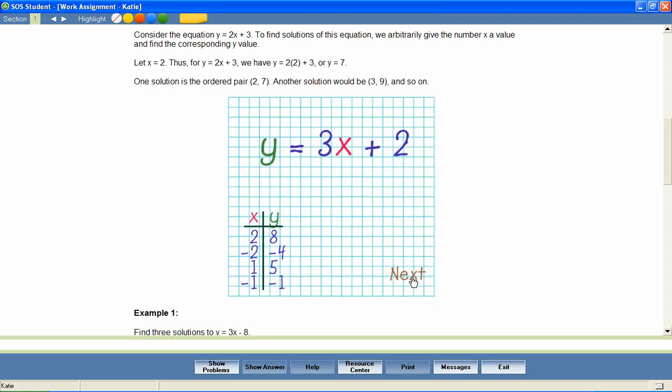Great. Now plot the points. And draw your line by connecting the points. So that's what Y equals 3X plus 2 looks like.